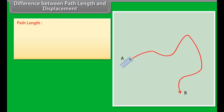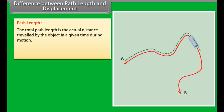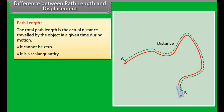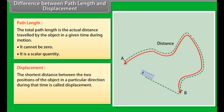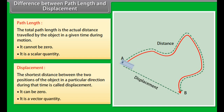Difference between path length and displacement: Path length is the total actual distance traveled by the object in a given time during motion. It cannot be zero and is a scalar quantity. Displacement is the shortest distance between two positions of the object in a particular direction during that time. It can be zero and is a vector quantity.